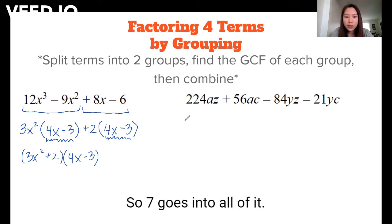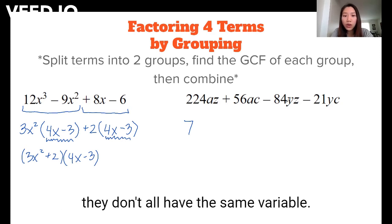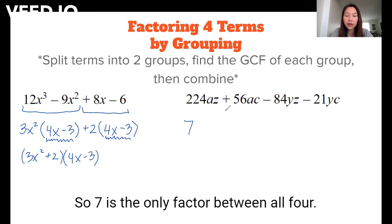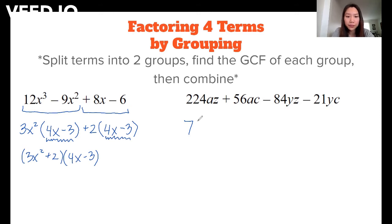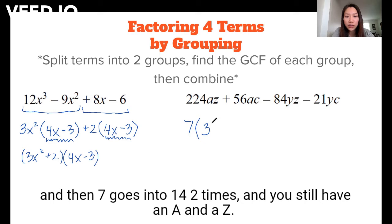So 7 goes into all of it, and if I check the variables, none of the terms, they don't all have the same variable. So 7 is the only factor between all four. So 7 goes into 224, 7 goes into 22 three times with one left over, and then 7 goes into 14 two times, and you still have an A and a Z.